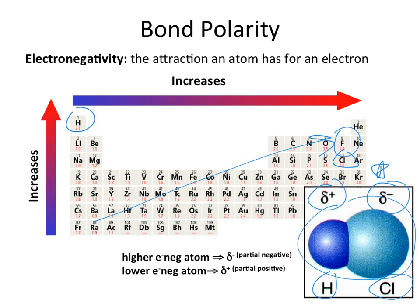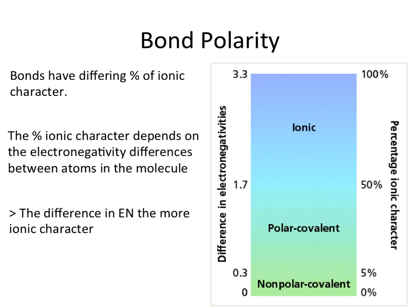The atom with the lower electronegativity value is going to have a partially positive charge. These types of charges, or dipole moments as they're called, are going to dictate some of the behaviors of the compound. We can look at bond polarity with respect to the percentage of ionic character that bonds possess. The percent ionic character is dictated by the differences in electronegativity — the larger the difference, the more ionic the character. Large differences lead to electron transfer; no difference means completely even sharing; somewhere in between gives a hybrid orientation.